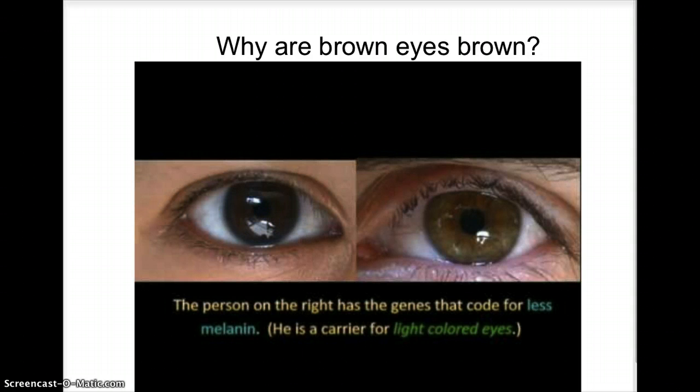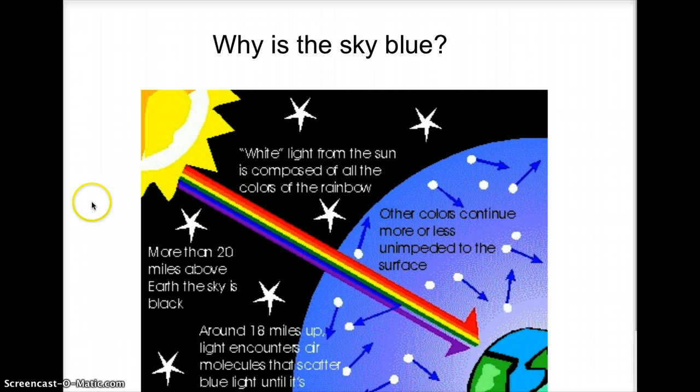But now this question here, of why are eyes blue, is different. And you see the picture I have in front of you, and I have the question of why is the sky blue? Because what's really interesting about blue eyes, unlike brown eyes, it's not like we have blue paint, like we kind of have brown paint. The reason we have blue eyes is exactly the same reason why the sky is blue.